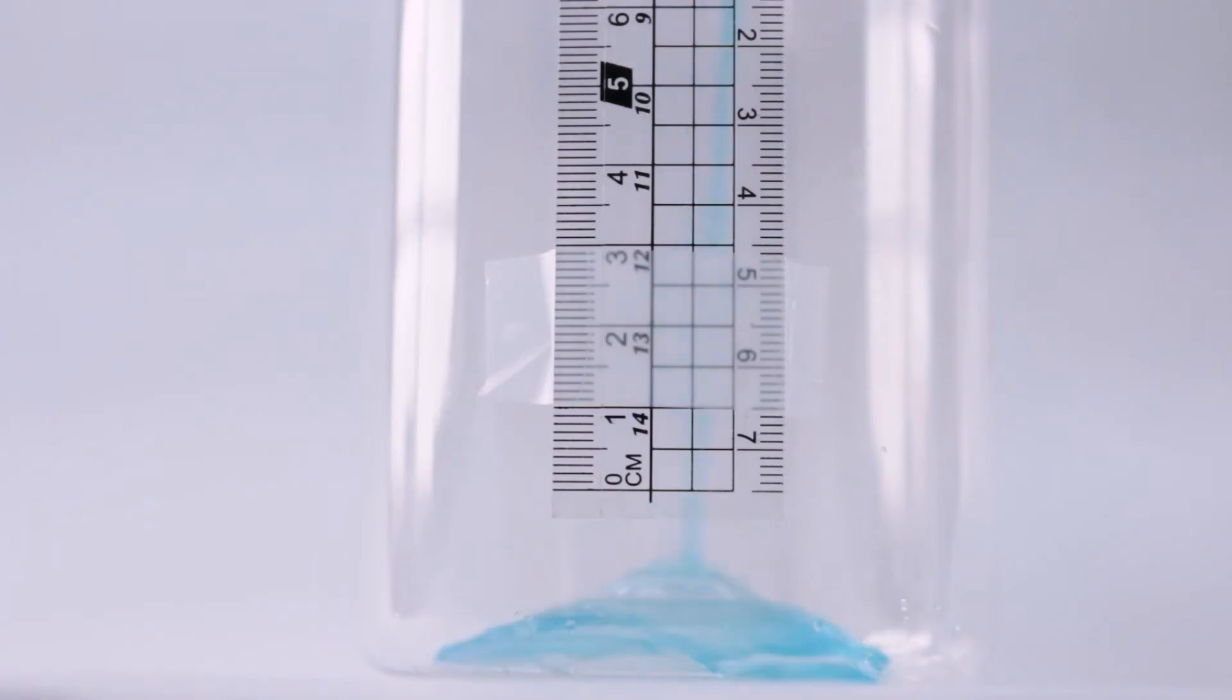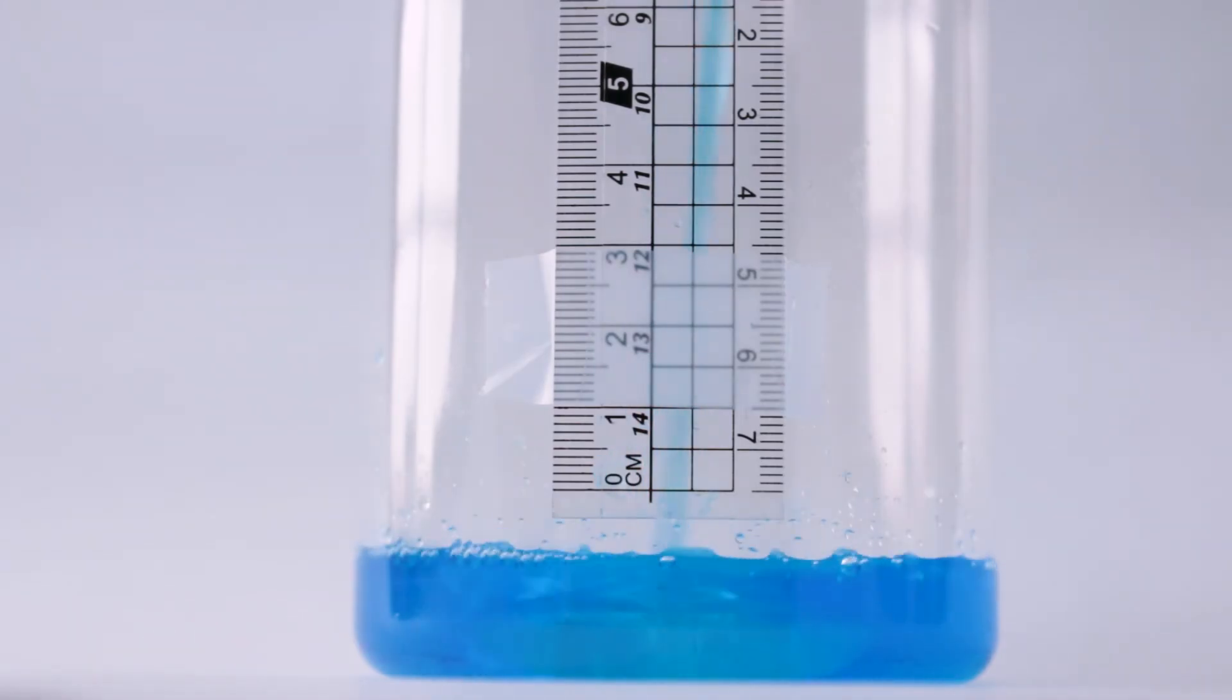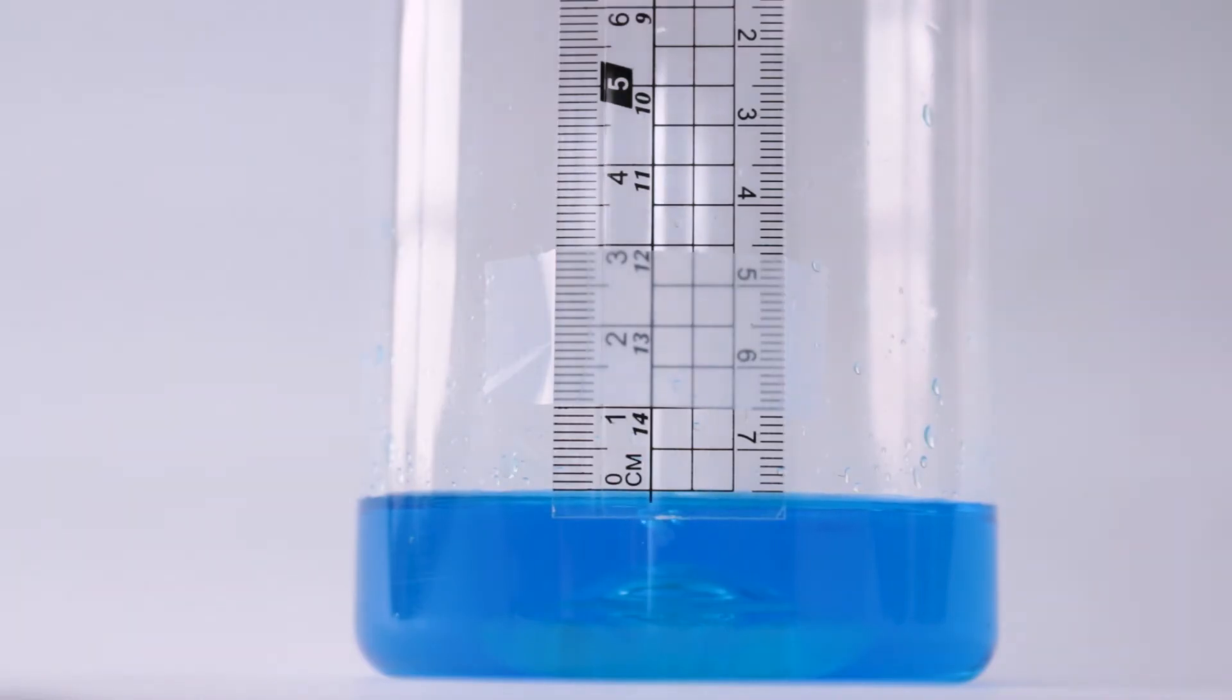But before you can start using your rain gauge, there's one last thing to do. Fill your rain gauge with colored water until it reaches the zero mark. This will give your rain gauge some weight so it doesn't get blown over, and it will make sure that you start collecting water from a completely flat surface.